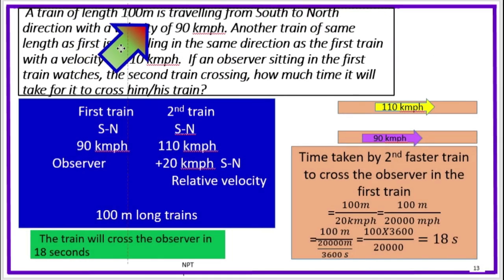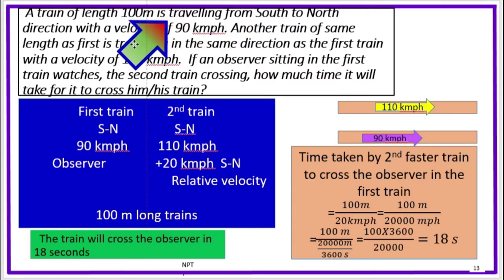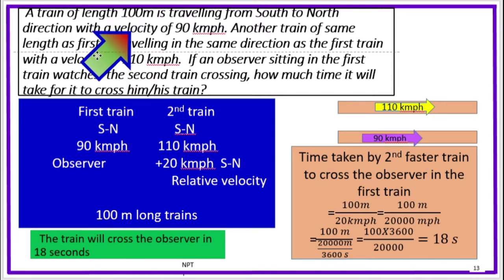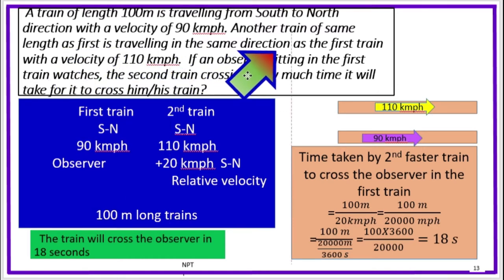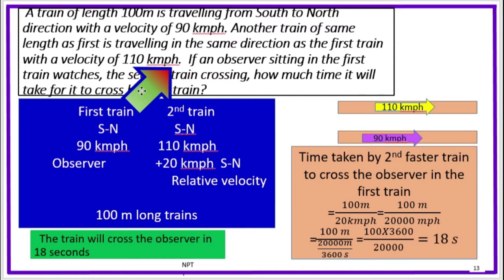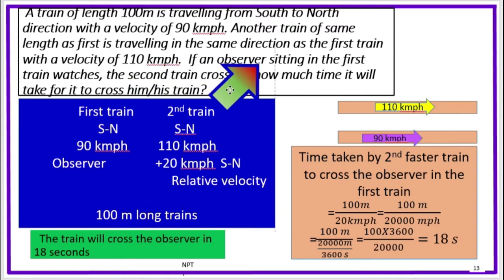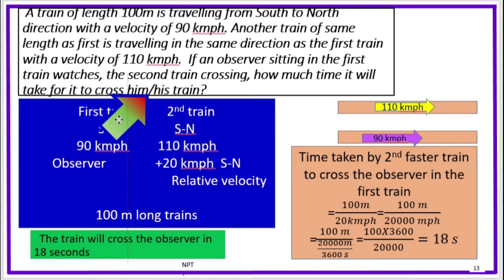A train of length 100 m is travelling from south to north at 90 km per hour. Another train of the same length, that is 100 m, is travelling in the same direction as the first train with a velocity of 110 km per hour. If an observer sitting in the first train watches the second train crossing, how much time will it take for it to cross him or his train?